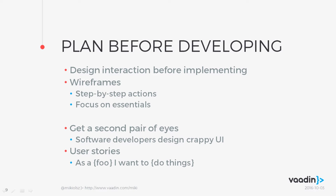The next tip is to plan before developing. This means you should design interaction before implementing — spend some time before you actually sit and start coding, planning and laying out how your application is going to look like. You should focus on essentials. Two things on how to achieve that: one is to get a second pair of eyes, which means finding somebody who is not a software developer to look at your wireframes and user stories and tell you what can be improved. Software developers design crappy UI.